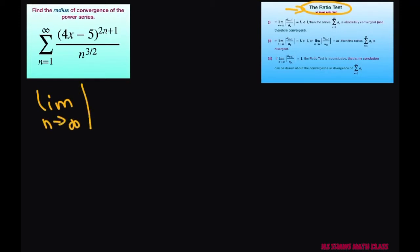We're going to take the absolute value of a sub n plus one divided by a sub n. Now if the limit is less than one, it's convergent, and if it's greater than one, it's divergent.